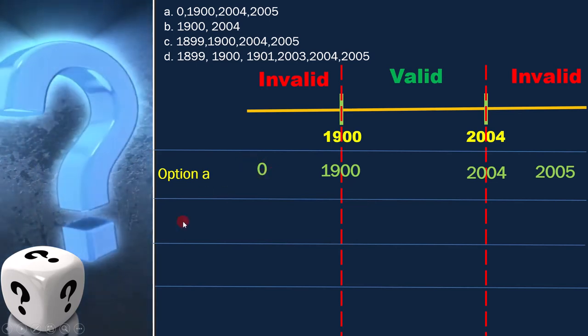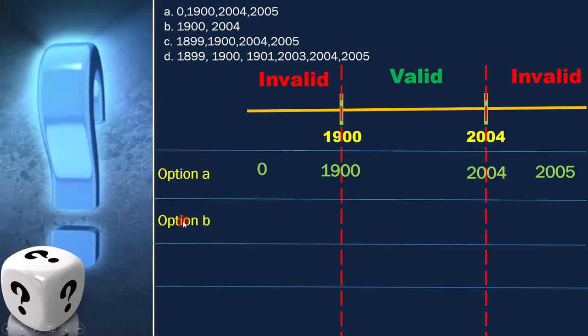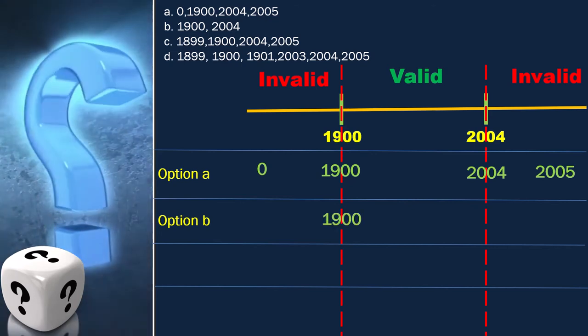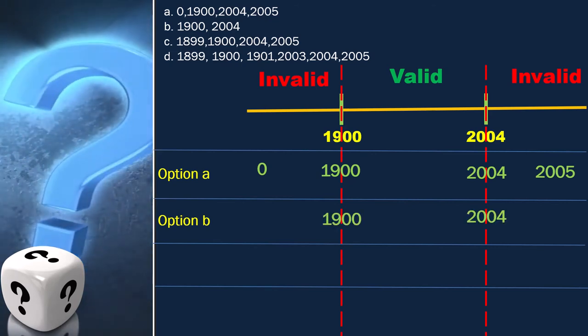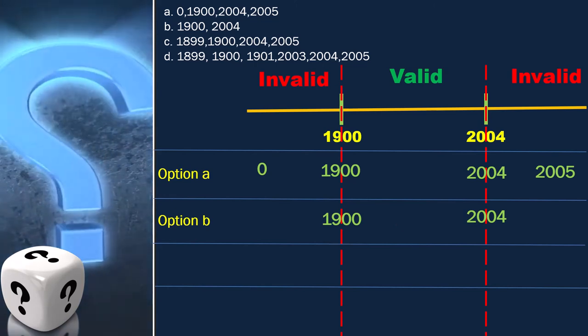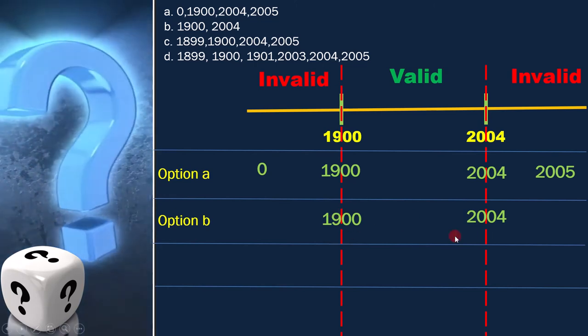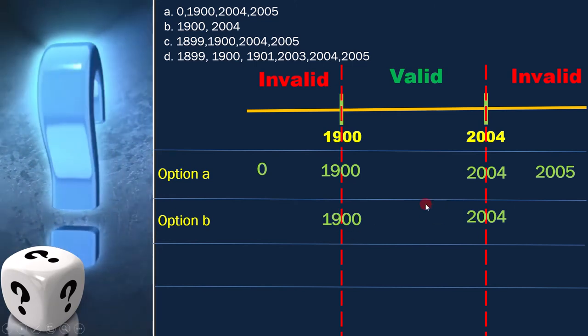Now let's analyze the second option. The second option is 1900 and 2004. We can place them like this. Both the values are at the boundary.